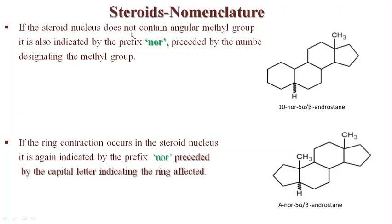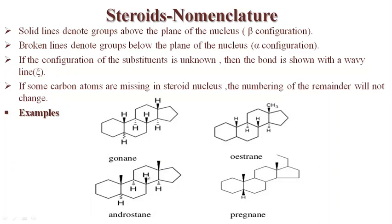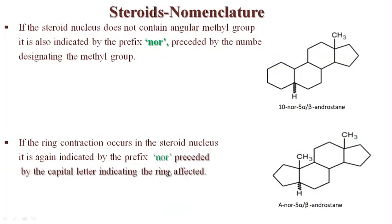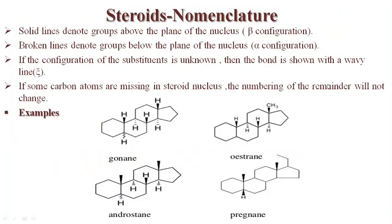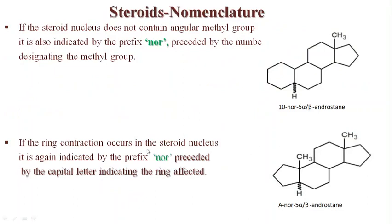If the steroid nucleus does not contain an angular methyl group, it is also indicated by the prefix 'nor' preceded by the number designating that methyl group. In androstane, there are two methyl groups; if the angular methyl group at position 10 is absent, we use the prefix 'nor' with position 10. So the name is written as 10-nor-5α/β-androstane.